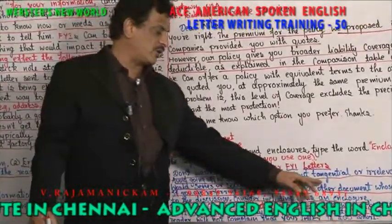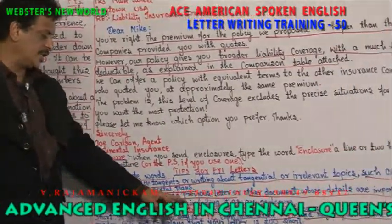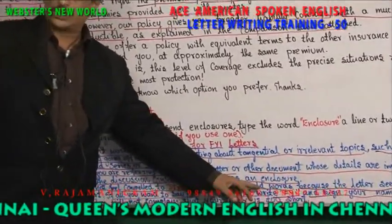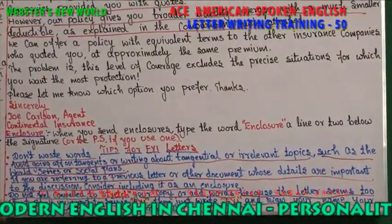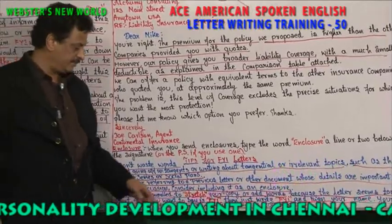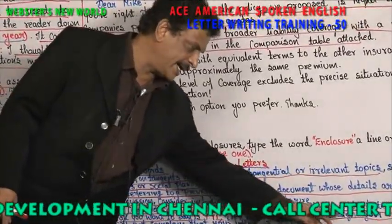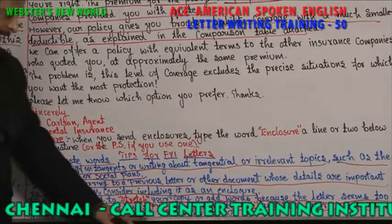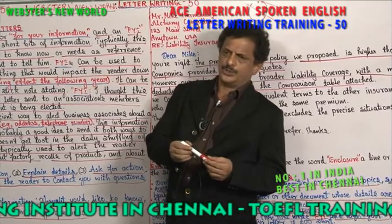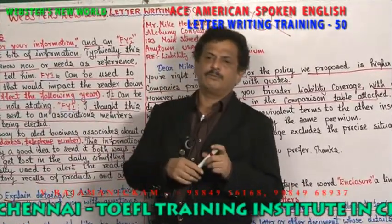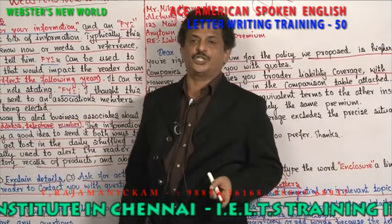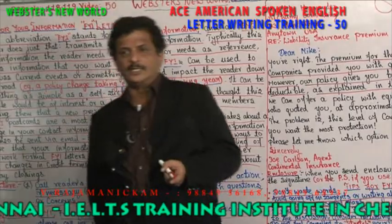If you are referring to a previous letter or other document whose details are important to the discussion, consider including it as an enclosure. Do not feel compelled to stretch your copy or add words because the letter seems too short. If all you want to say is FYI — for your information — then just write FYI and sign your name. Your reader will not complain that your letter is too short. So dear friends, for your information letters are very important. Hope you are able to understand for your information letters.